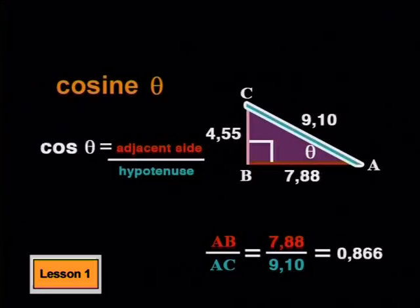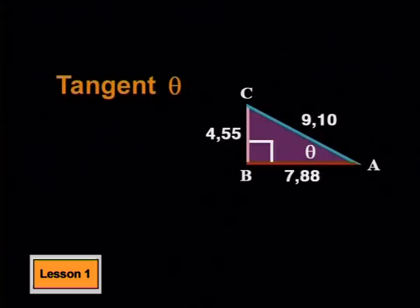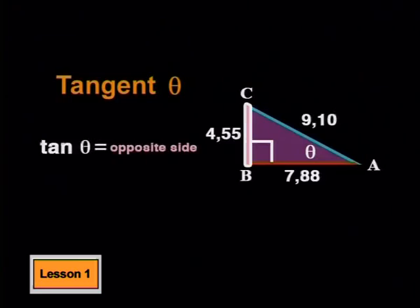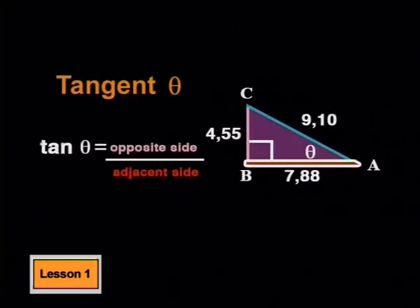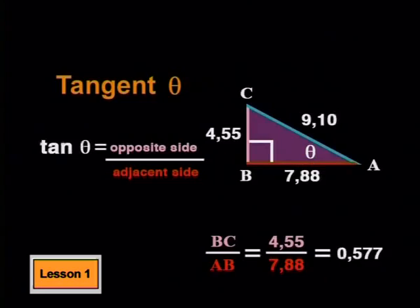The third ratio we deal with is tangent theta or tan theta for short. This is the constant ratio of the opposite side divided by the adjacent side. In triangle ABC, that will be BC divided by AB.